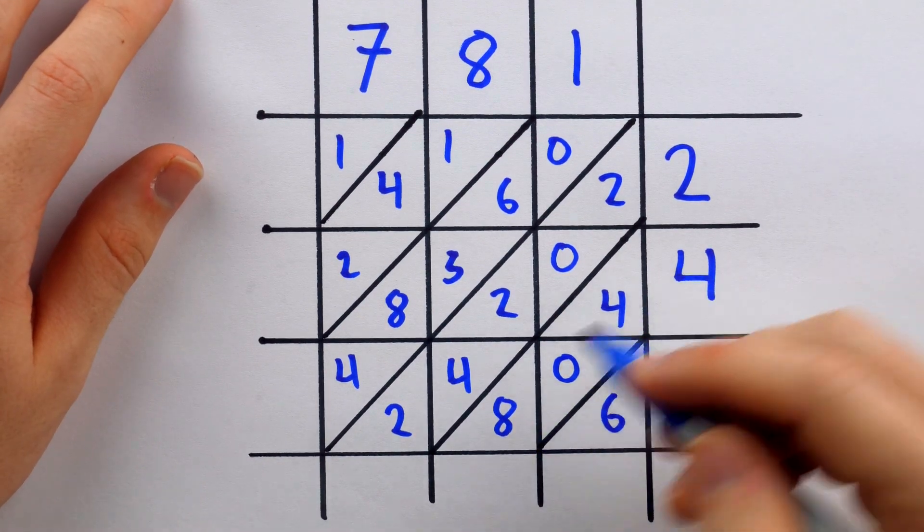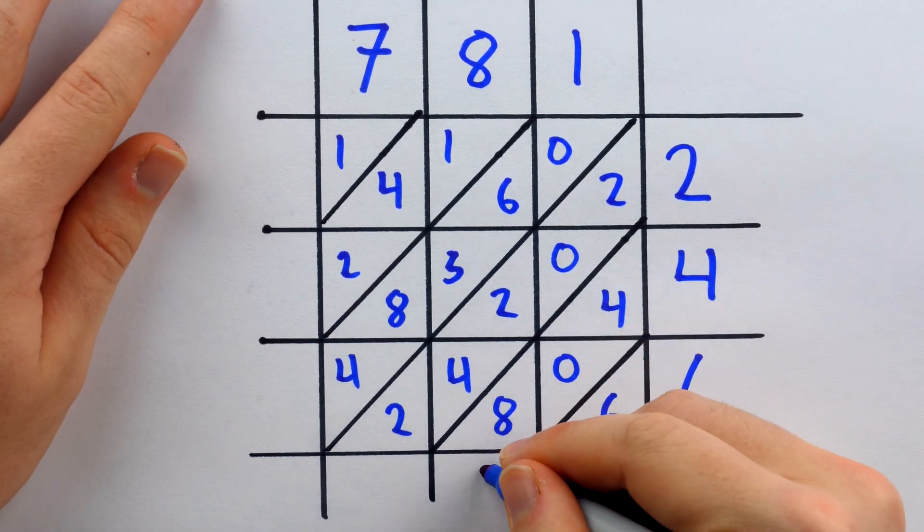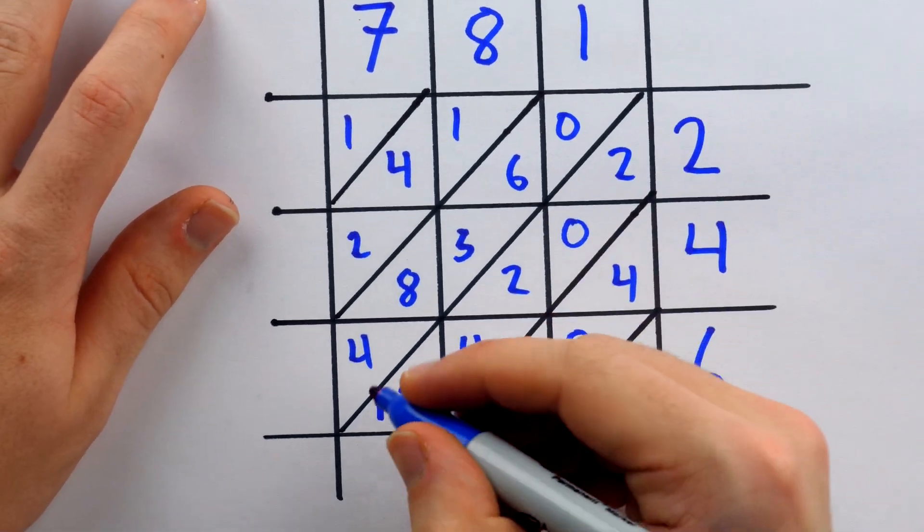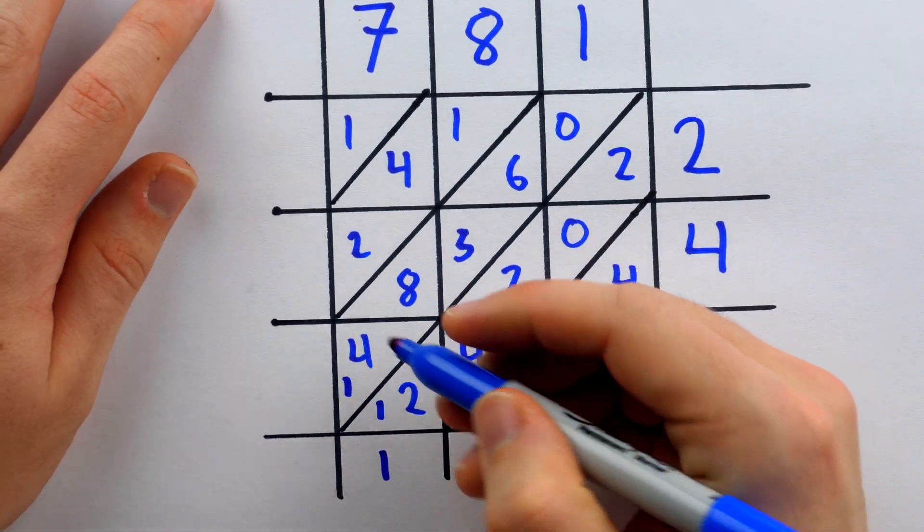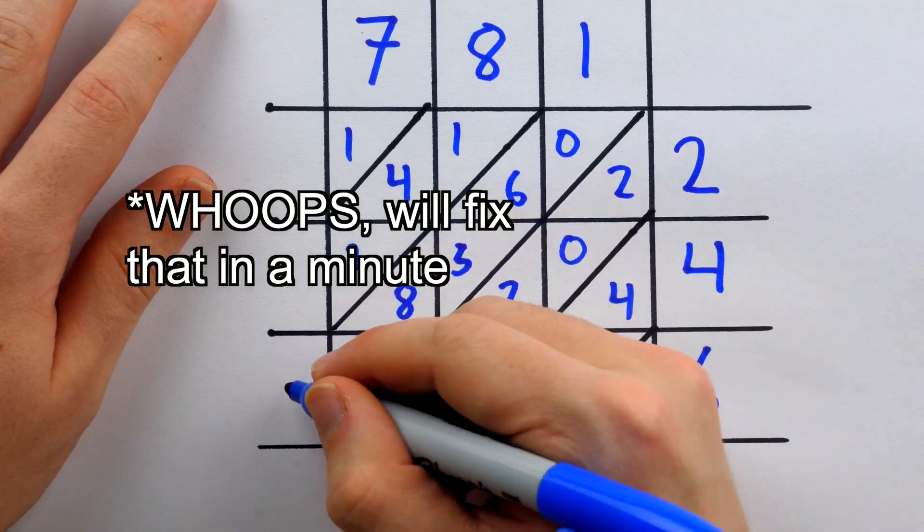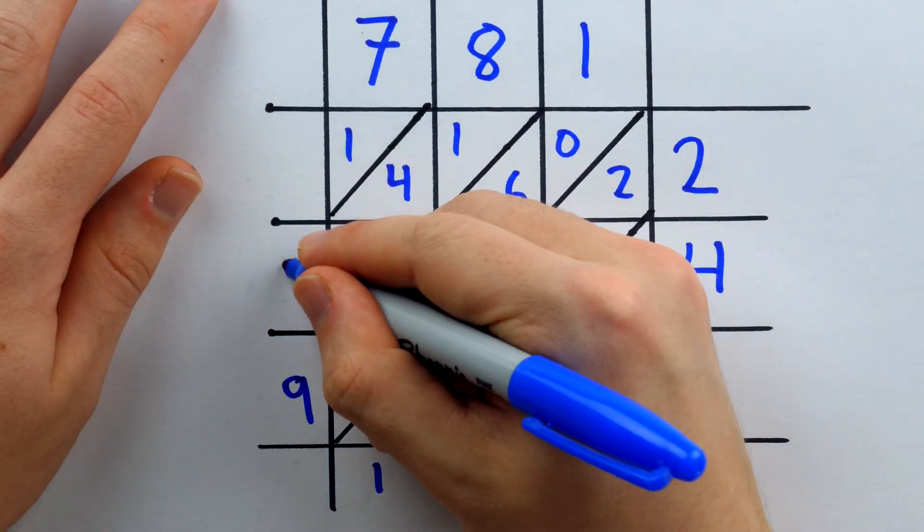We then again add up the diagonal slices. This gives us 6, this gives us 12, so write the 2, carry the 1, 3, 7, 8, 9, 10, 11, so write the 1, carry a 1, 4, 5, 13, 16, 16, 19, so write the 9, carry a 1, 7, 8, and then 1.